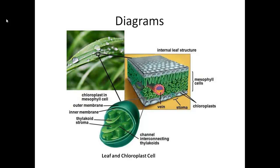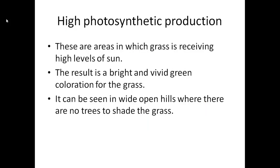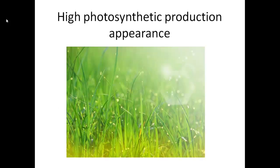Grass gets its specific color based on the level of photosynthesis. High photosynthetic production occurs in areas where grass receives a high level of sun and no shade, resulting in a bright, vivid green color. An example of where this would be seen is wide open hills, where there are no trees and shade for the grass. This picture shows exactly how grass under high photosynthetic production would appear.